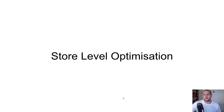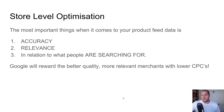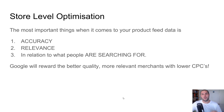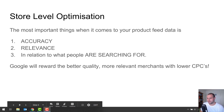Store level optimization: the most important things when it comes to your product feed are accuracy and relevance — accuracy and relevance in relation to what people are searching for. There needs to be a connection between your product and what people are searching for. You need to make sure you're giving users of Google a really good experience. Google is going to reward you — the most relevant merchants with the highest quality feeds are going to get lower cost per clicks and in turn lower cost per conversions.